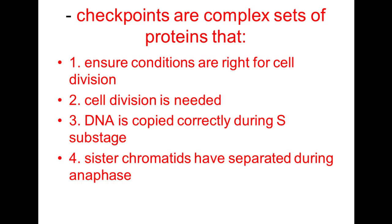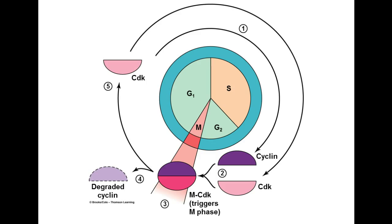The checkpoints also ensure that sister chromatids have separated during anaphase. Here is our diagram of the cell cycle showing M, G1, S, and G2. This diagram shows just one component of the control system: cyclin and cyclin-dependent kinase. Cyclin gets its name because its concentration increases and decreases at various points in the cell cycle.